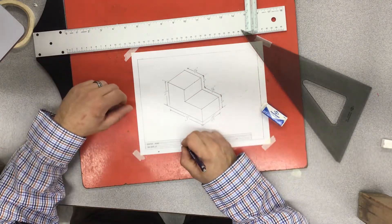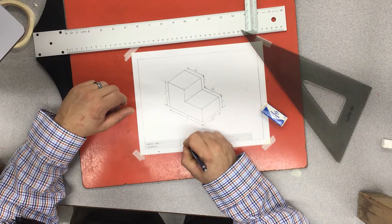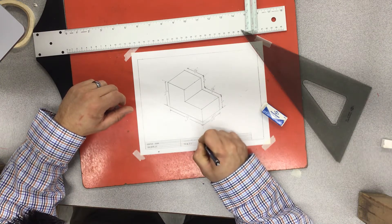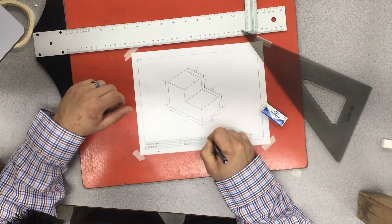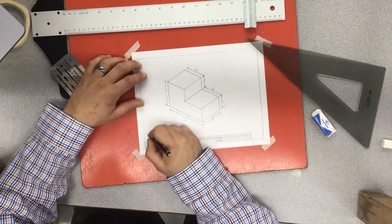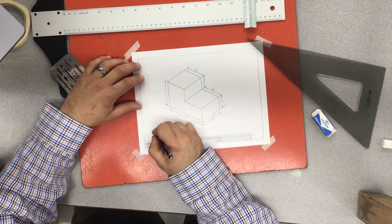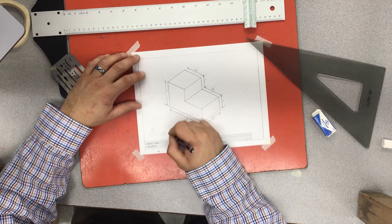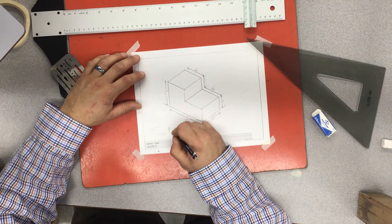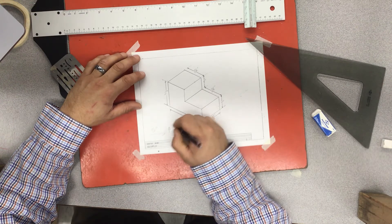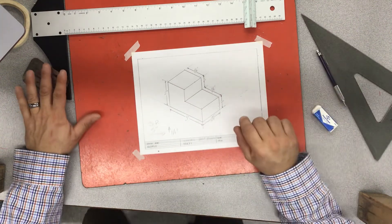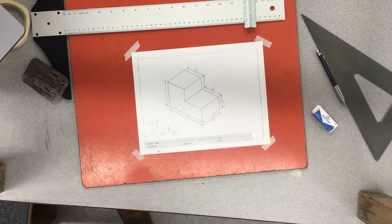Now this drawing is called the step block isometric. Step block. All right. The start point is five inches over and it's one and one quarter inch up. Start point. All right, that is your drawing.